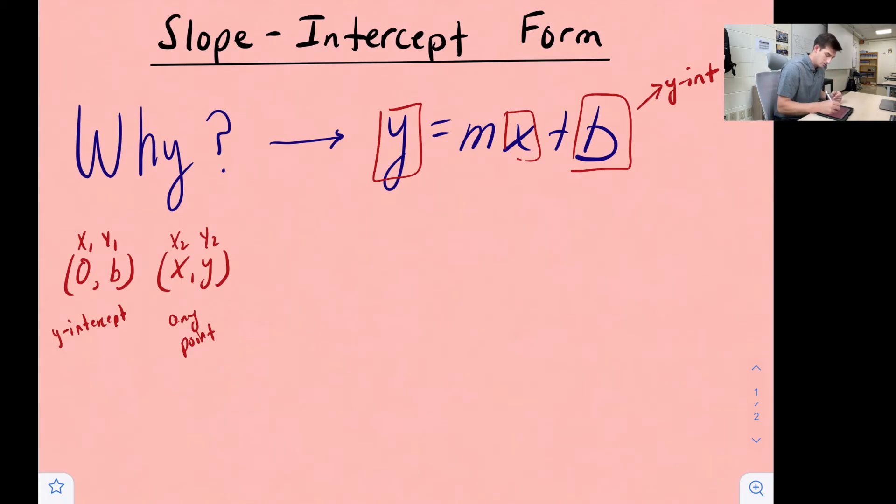Now the other variable in our equation is m, and m stands for our slope. We can find slope by finding the difference in our y values and dividing that by the difference in our x values, otherwise known as the slope formula. So now let's fill in y sub two, y sub one, x sub two, x sub one with our coordinate points that we have over here.